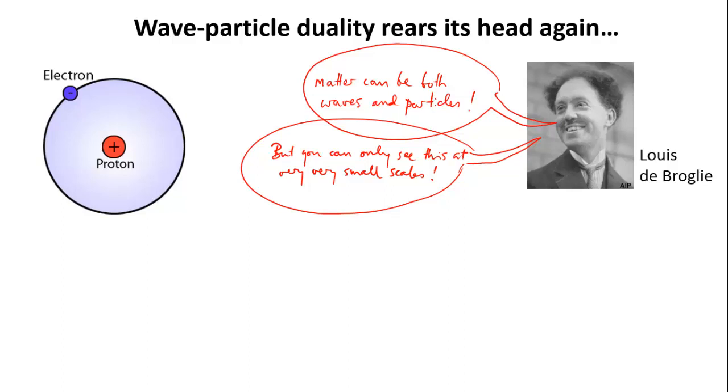Einstein had already shown wave-particle duality with the smallest particles we know, photons, but they have no mass. It's another thing entirely to say that particles with actual mass should behave like a wave. But de Broglie predicted that with something as small as an electron, it should be possible to observe wave-like behavior.